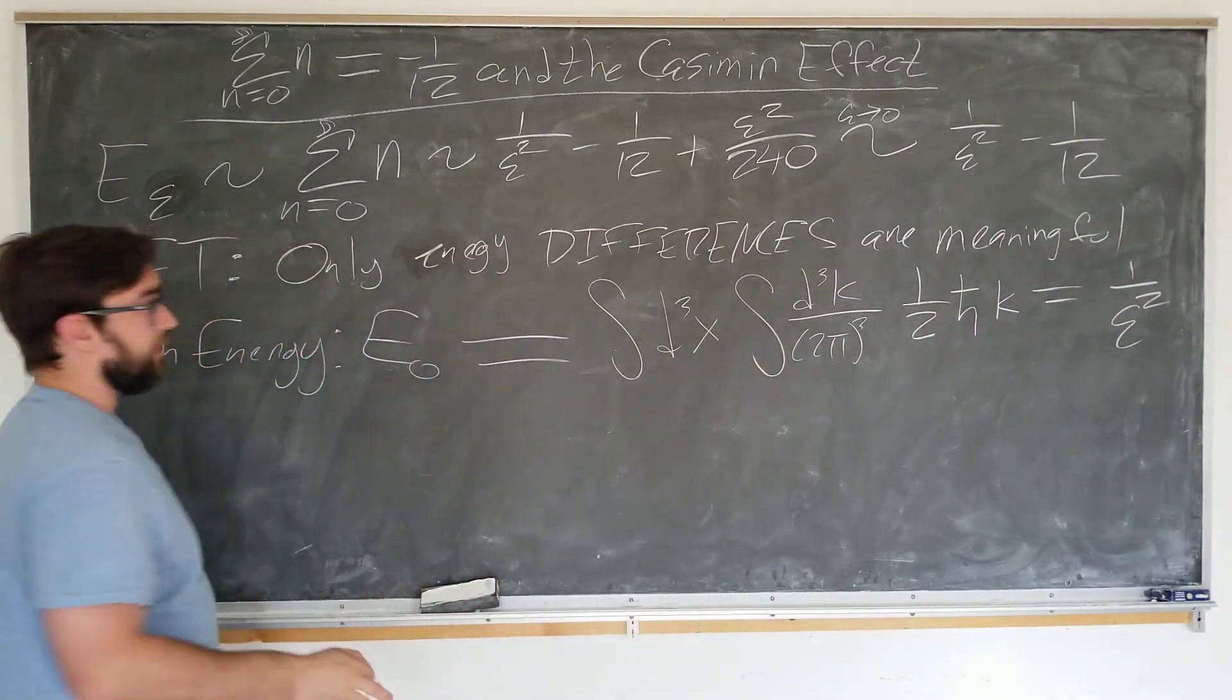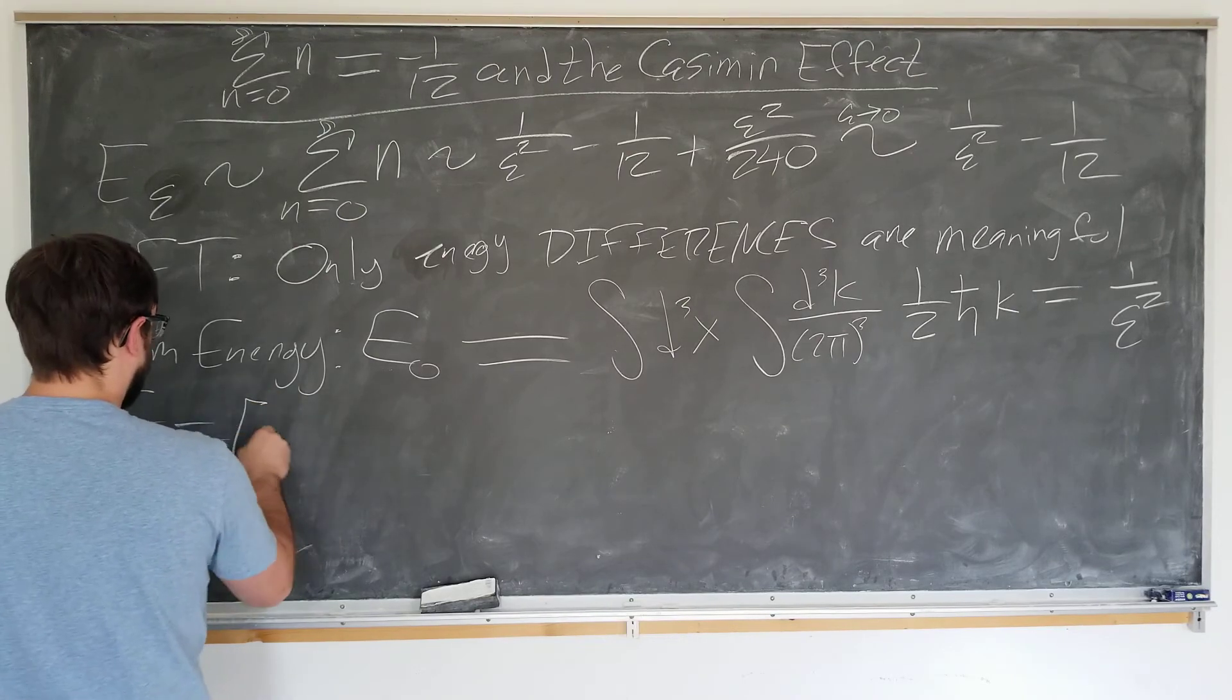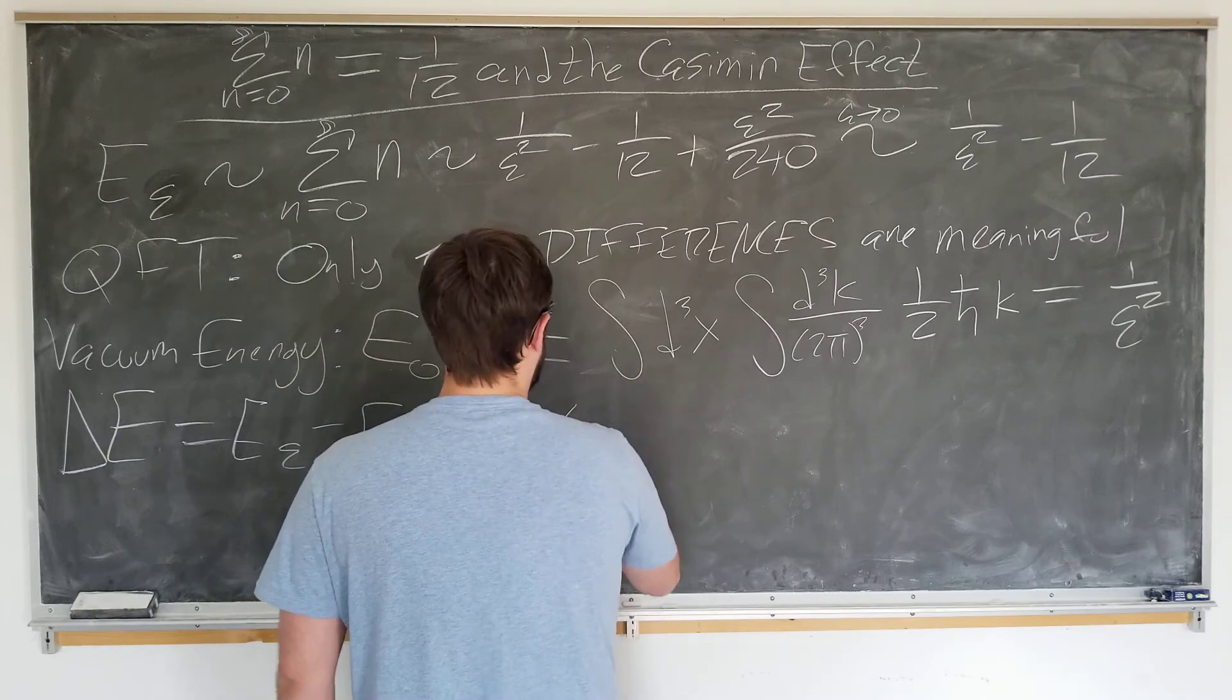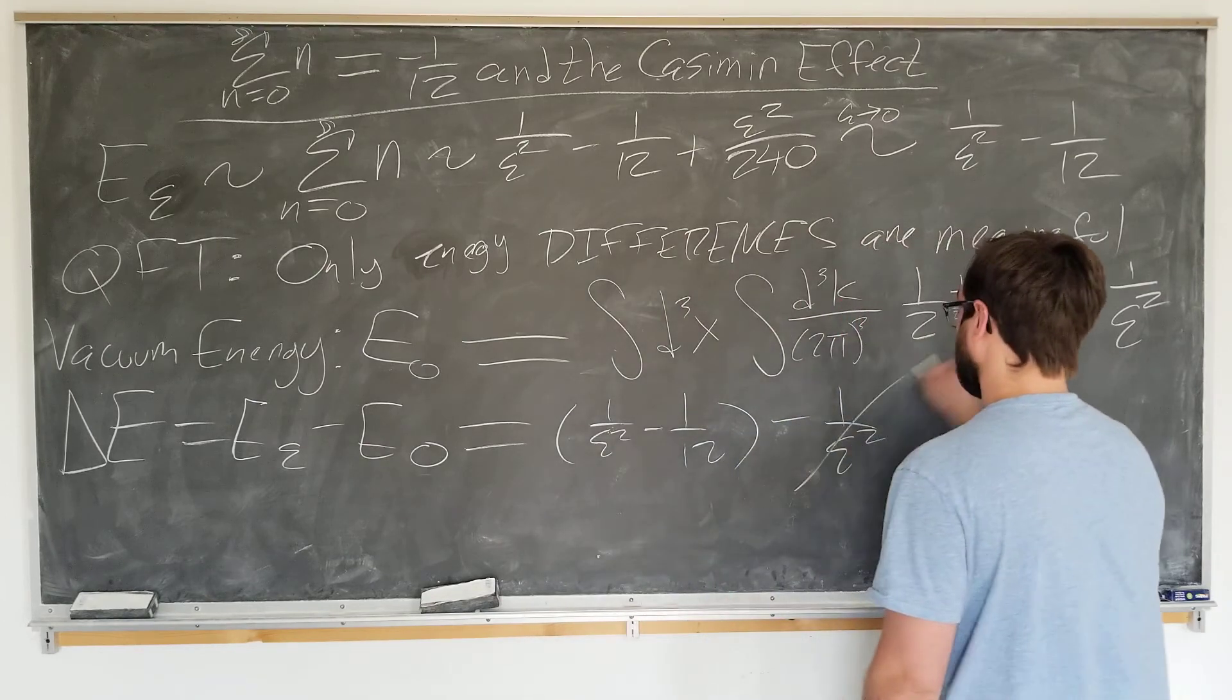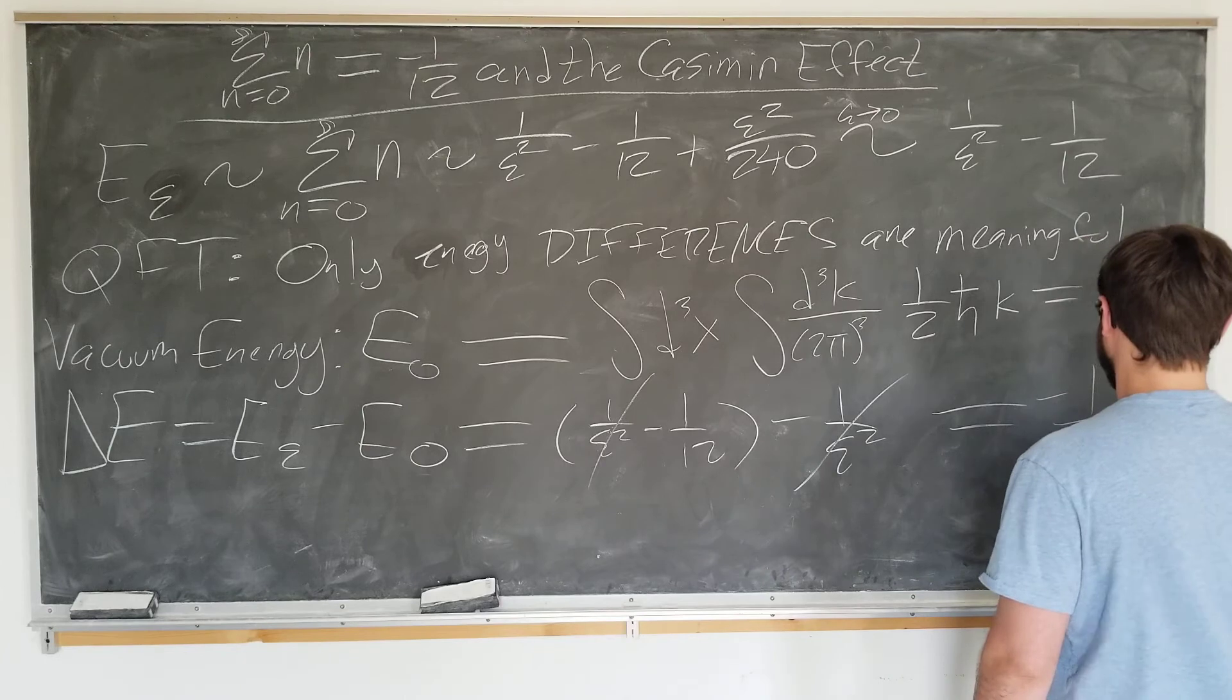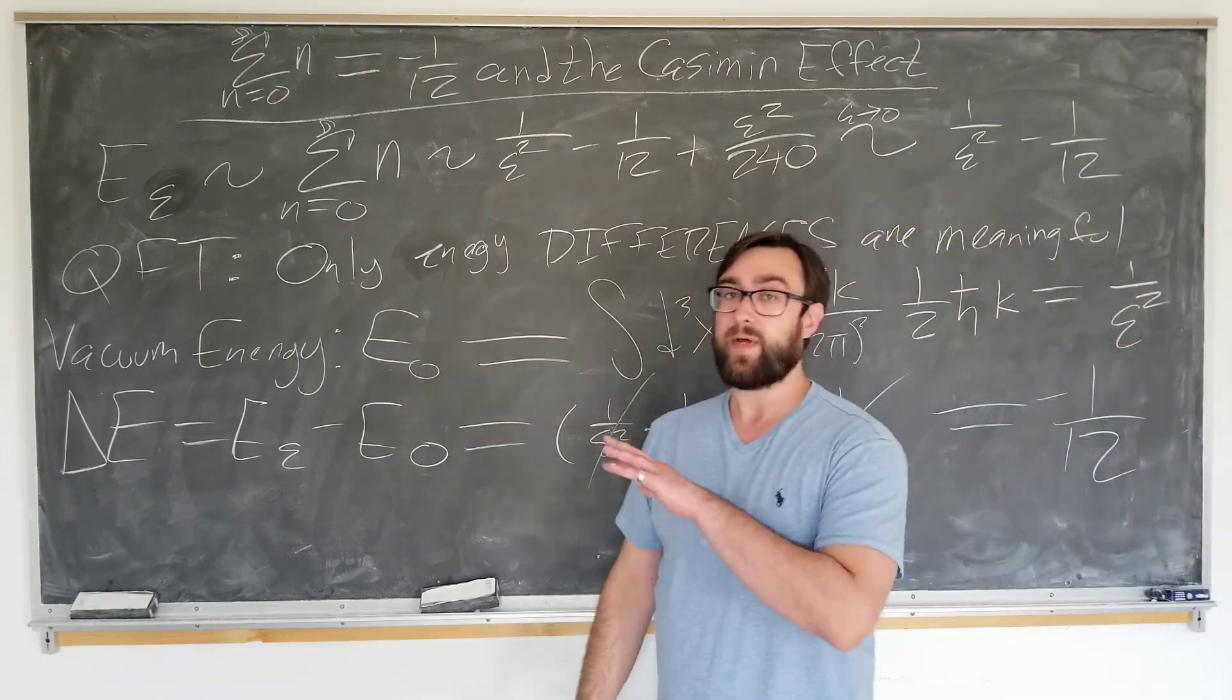Now we can see how these might cancel out. So let's go ahead and consider delta E to be E_epsilon minus E_0. And this is just 1 over epsilon squared minus 1/12 minus 1 over epsilon squared. And, celebrating, epsilons cancel out. Just equal to minus 1/12, the same famous one you've seen in many other videos.